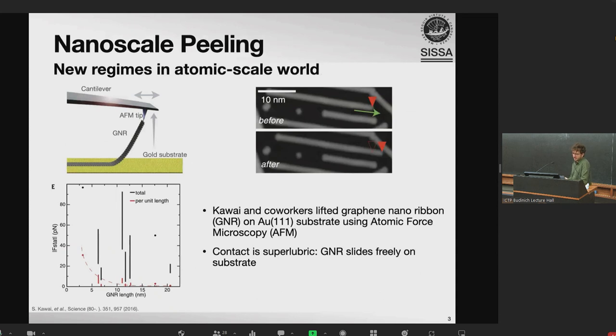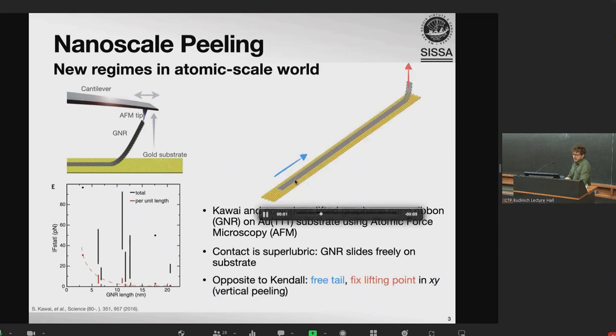With the advent of nanotechnology, peeling was observed also at the nanoscale and found to be rather different. In particular, Kauai and coworkers in Basel in 2016, they managed to absorb a nanoribbon on gold surfaces. And with an AFM tip, they were able to go and pick up this ribbon at one end. They were able to lift it and move it around, discovering that first of all, the interface is superlubric, so the friction doesn't depend on the length. And in this case, the peeling occurs in an opposite way compared to Kendall. So here the tail being superlubric is free to slide and the point of lifting is instead fixed. So we have that the peeling proceeds vertically, consuming the ribbon from the tail.